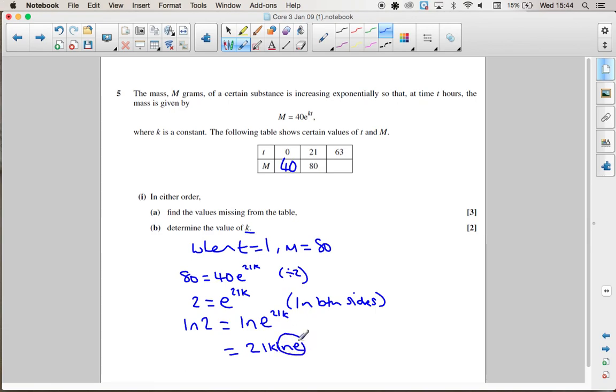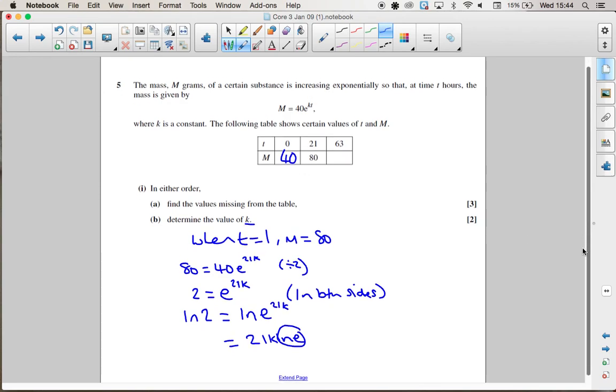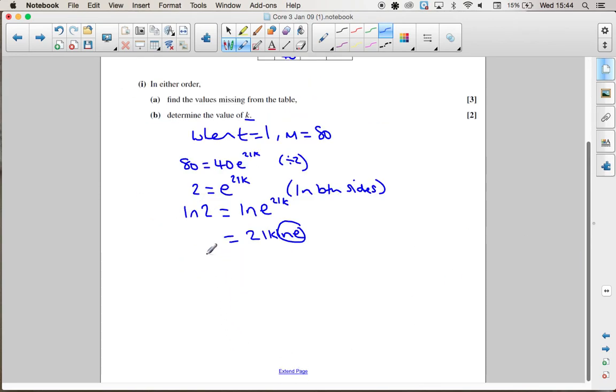So I get 21k times ln e. And you should know that the natural log of e is 1, so that leaves us with just 21k. So ln 2 equals 21k. You can go straight from this step to this step if you remember that when you take the natural log of e, this power comes to the front and you'll go straight to 21k.